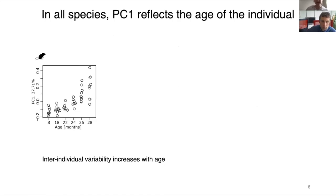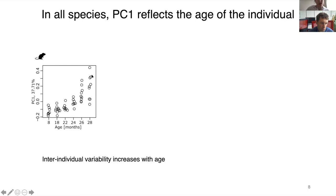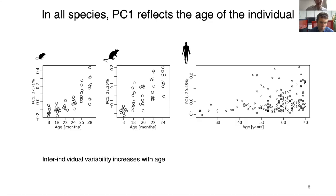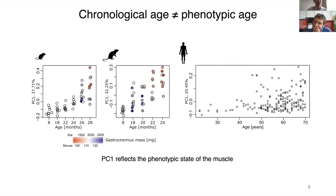To understand the structure of our dataset, I first performed principal component analysis. I depicted coordinates of principal component one, where each coordinate corresponds to one sample grouped by age. PC1 demonstrates two aspects: a trend of molecular changes happening during muscle aging, and increased inter-individual variability during aging. Strikingly, analysis of datasets from rat and human showed a similar pattern, leading us to hypothesize that individual trajectories of muscle aging differ between individuals.